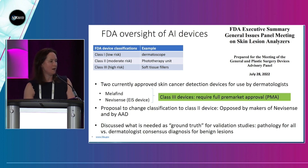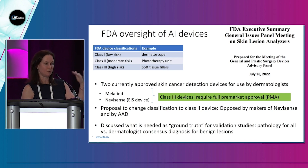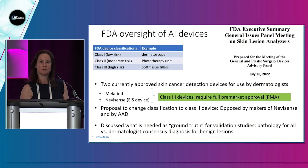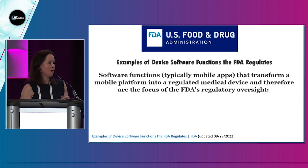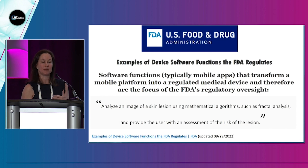The FDA does have oversight of AI devices, and this has been an ongoing conversation with a panel meeting recently. Devices are classified by risk: class one is low, two is moderate, three is high. Currently approved devices — MelaFind and NevioSense — are considered class three, requiring full approval. There was discussion of changing this to class two; interestingly, the companies that make these devices and the AAD oppose that. The FDA has said that an app that analyzes a skin lesion and provides the user with a risk assessment is something they feel they should oversee, although right now these are available without FDA oversight.